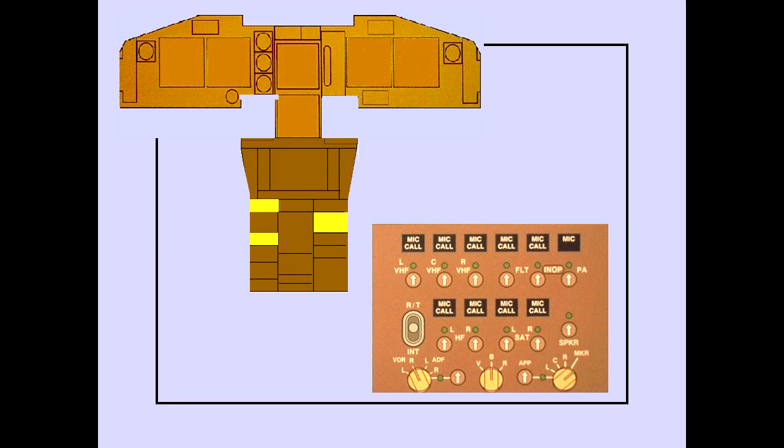Three identical audio panels are located on the aisle stand. The left forward panel is for the captain, the right panel is for the first officer, and the aft panel is the first observer's.